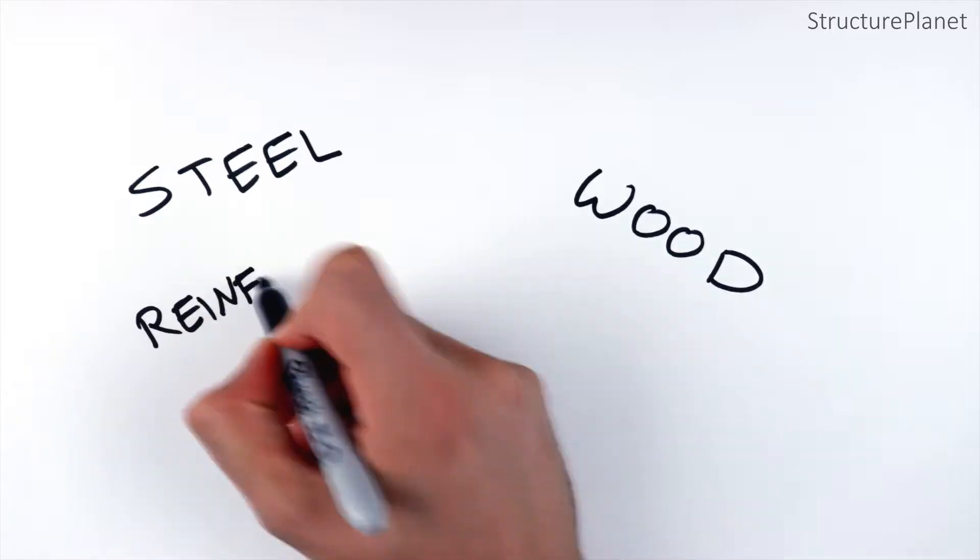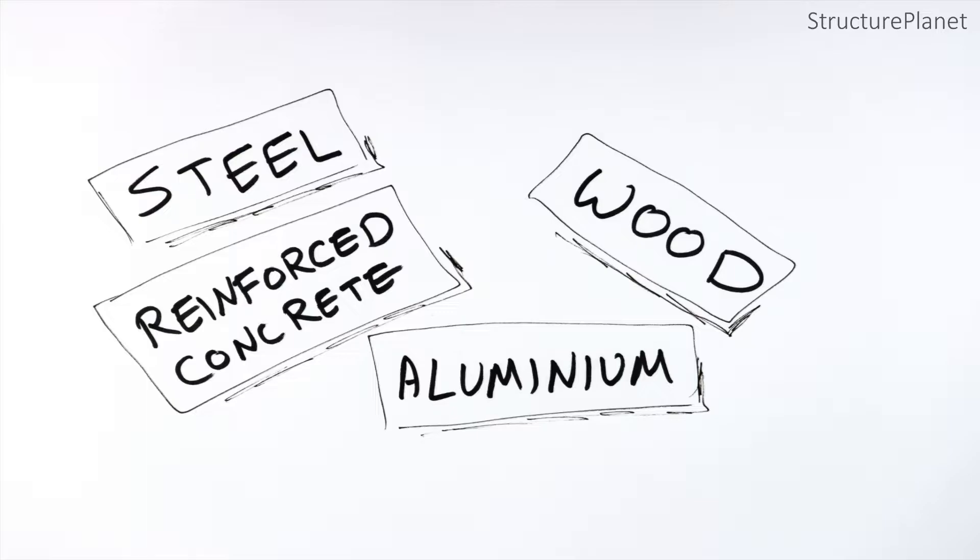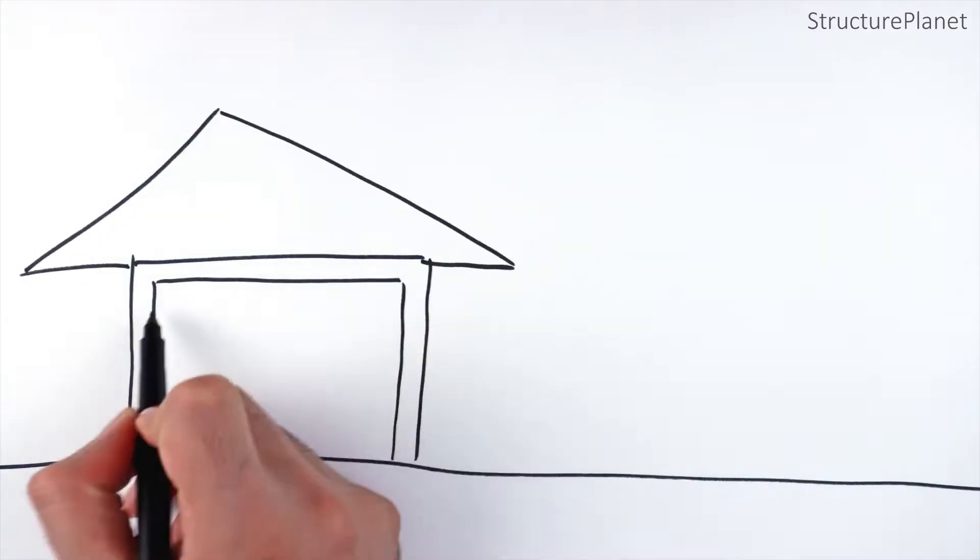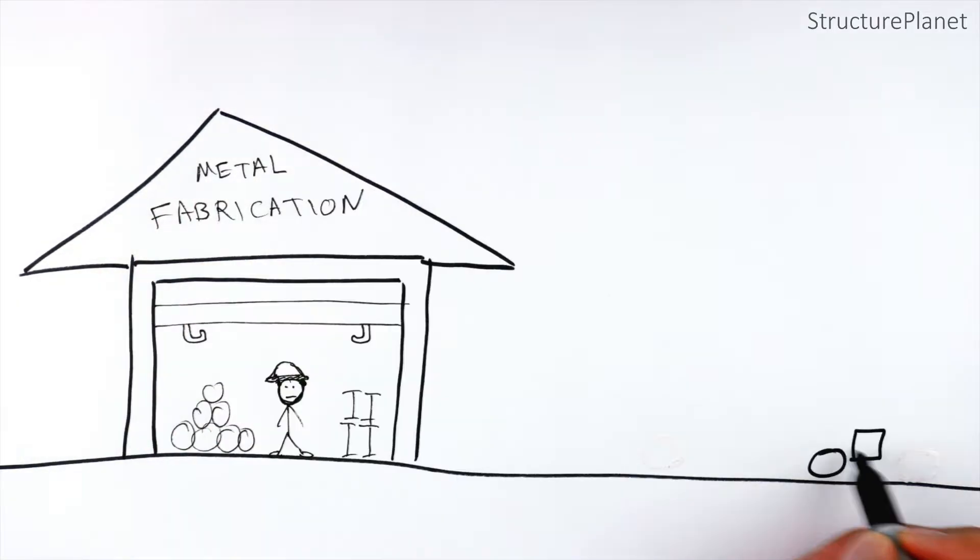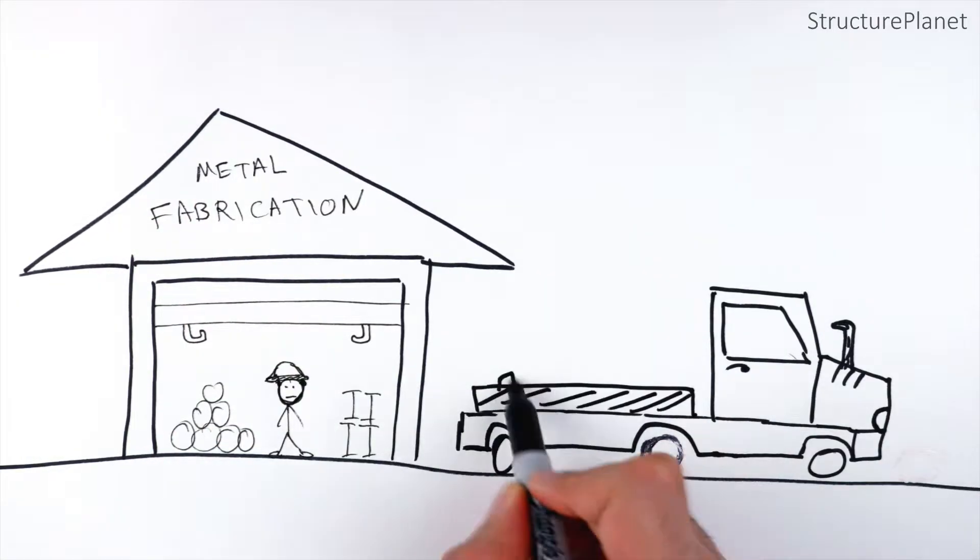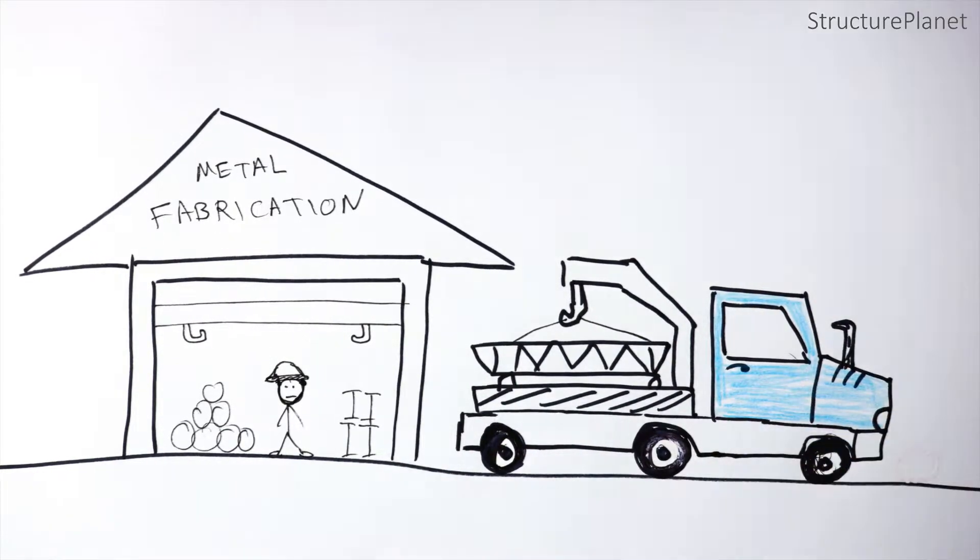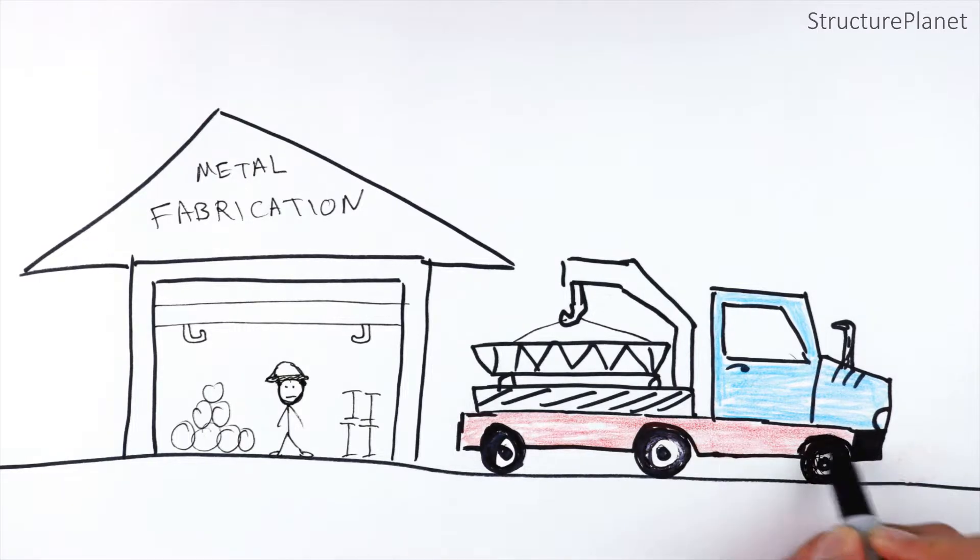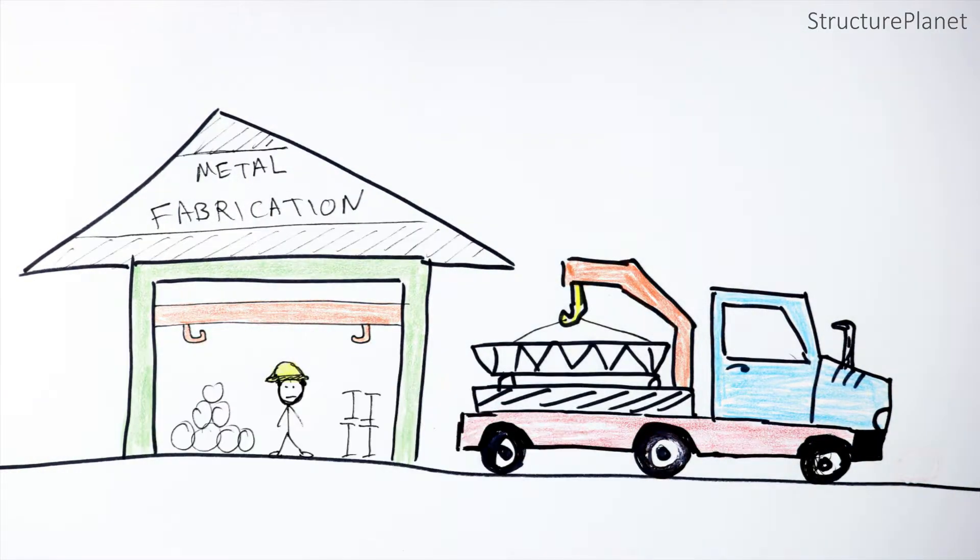Trusses are generally made out of steel or wood, but they can also be made in reinforced concrete or aluminum. Depending on the span size and loads, steel trusses can be made with small double angles or large I-beams. They are generally made in steel fabrication facilities and transported to the project site for installation. Long trusses may be made in smaller pieces which can be bolted or welded together on site.